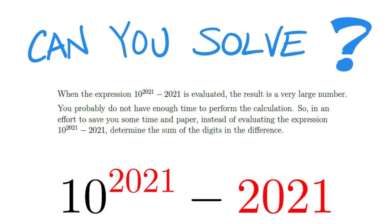Hey everybody, we're back with another contest question. Take a look up top — can you solve that problem? I'll give you a moment to read it. It's a little wordy, but the key point at the end is that we need to come up with the sum of the digits in this subtraction expression: 10 to the exponent 2021 minus 2021. Not what the answer is, but add up all the digits.